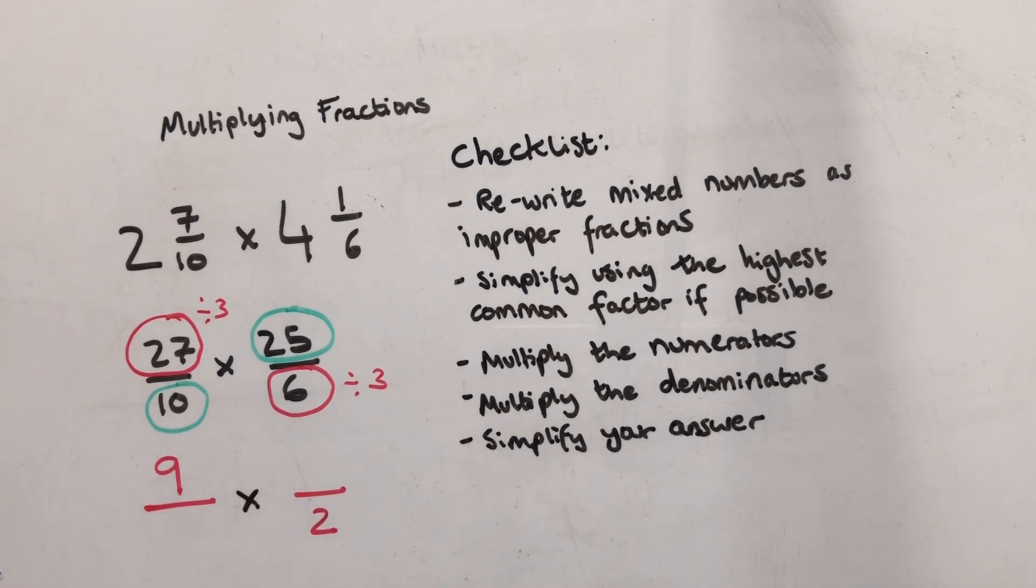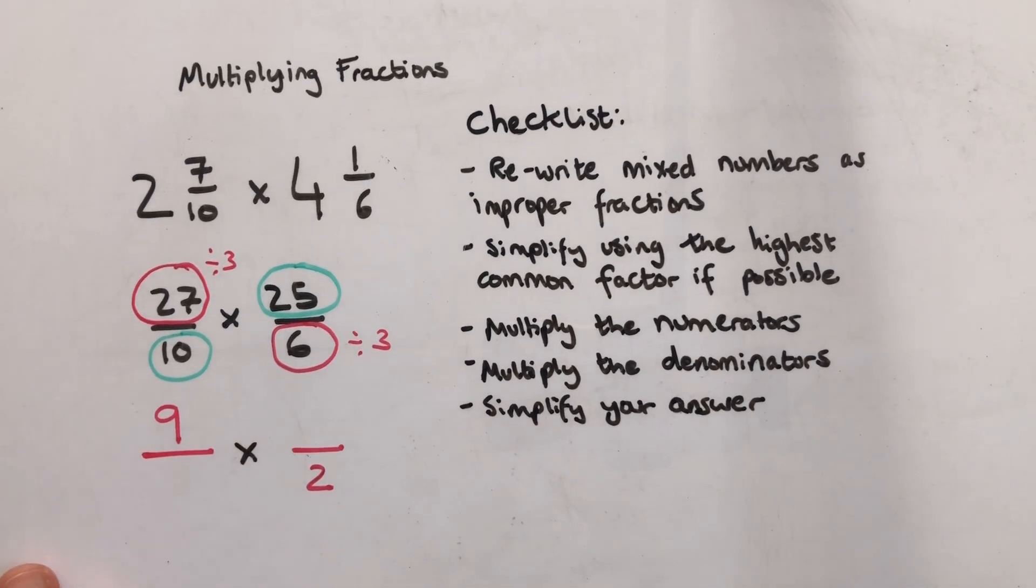Now if I go back to my ones that I'm going to divide by five. Twenty five divided by five is five, and ten divided by five is two.